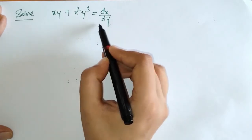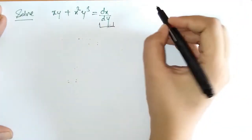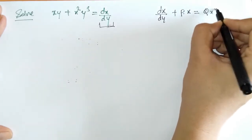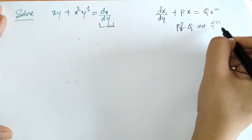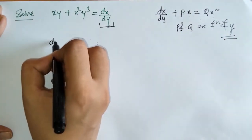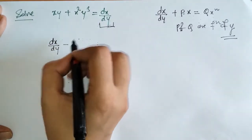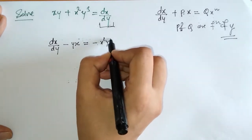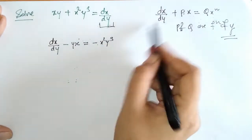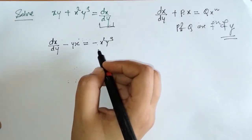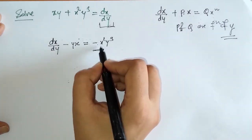Similarly, we will solve the next example. We can check that here we have the derivative term dx/dy. So this differential equation may be of the form dx/dy plus Px equals Q·x raised to n, where P and Q are functions of variable y. We will try to write it down in this form with dx/dy. Rearranging, we can check that we have this differential equation, which is a Bernoulli's differential equation.